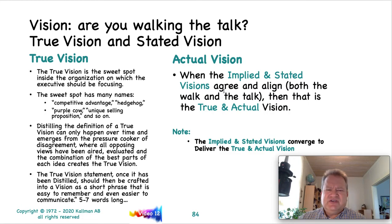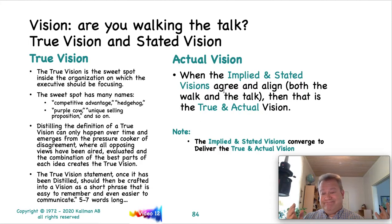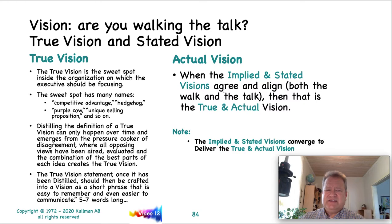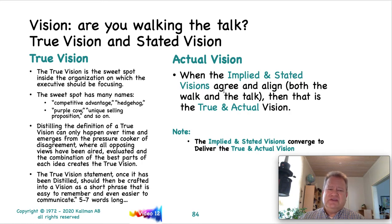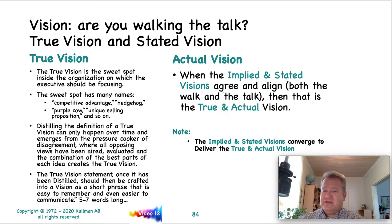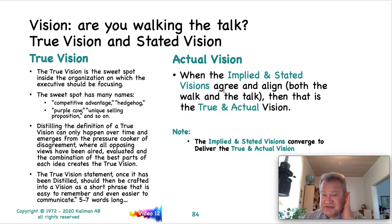Distilling the definition of a true vision only happens over time, and it emerges from the pressure cooker of disagreement. Because if you don't distill, you could end up with groupthink, and if you end up with groupthink, then you don't have a true vision. So that disagreement — where all opposing views have been aired, evaluated, and the best parts of each idea combined — contributes to creating the true vision. Once distilled and agreed to, it should be crafted into a short phrase that's easy to remember and communicate, no more than five to seven words long. When the implied and stated visions agree and align both the walk and the talk, that is the true and actual vision of the company.